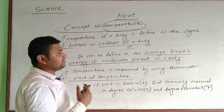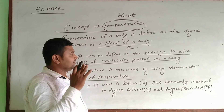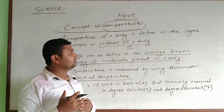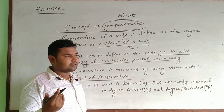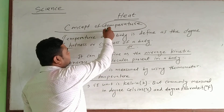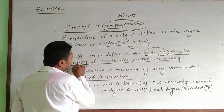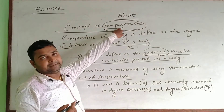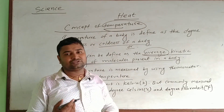But heat is about the sum of kinetic energy. What is the difference? According to the molecular kinetic theory, heat is the sum of kinetic energy of the molecules in the body. But temperature is the average of the kinetic energy of the molecules present in the body. Temperature is measured by the thermometer.